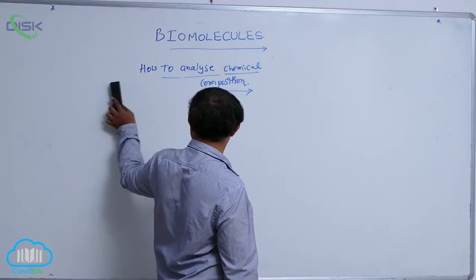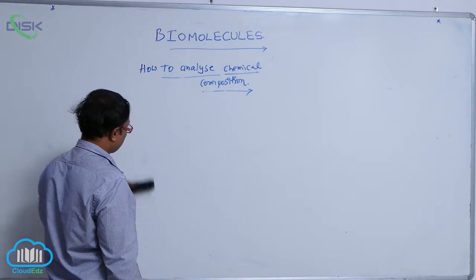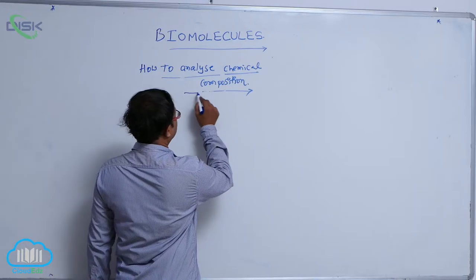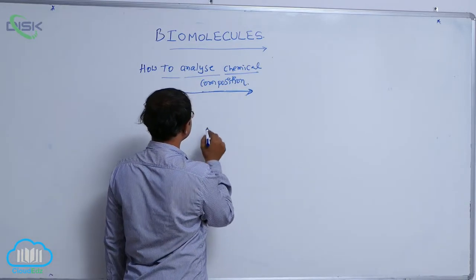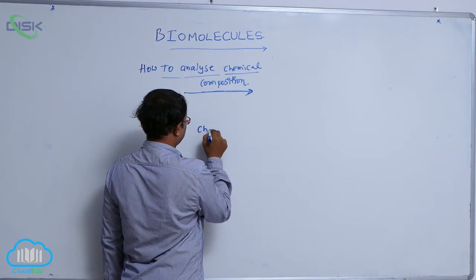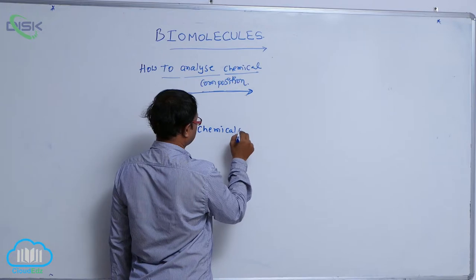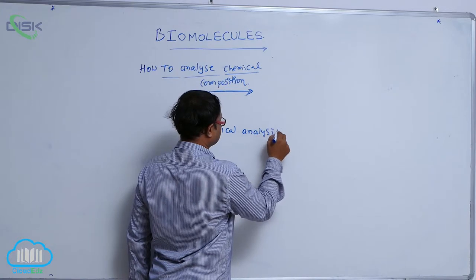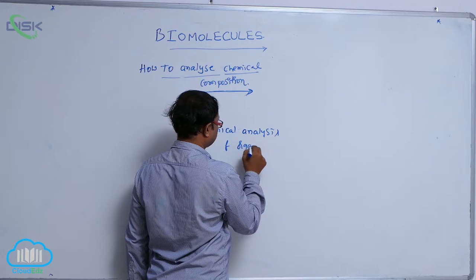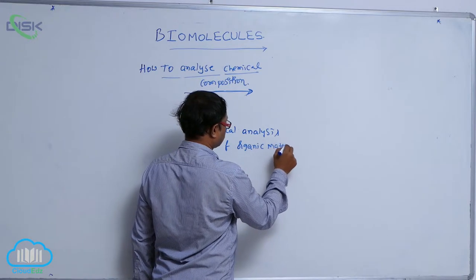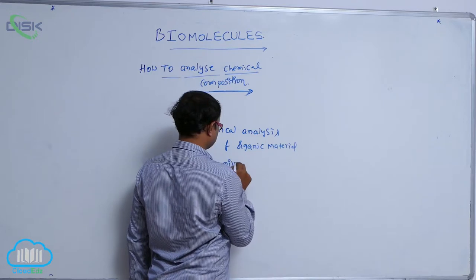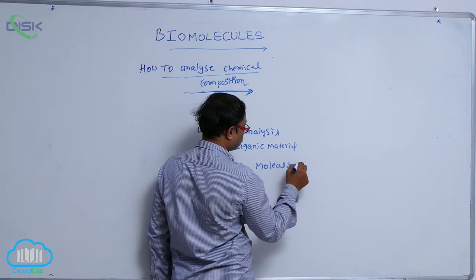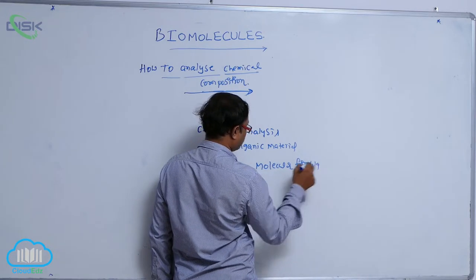Chemical organic compounds are obtained from living tissue, which we study in higher classes. For example, chemical analysis of organic material gives the molecular formula and chemical structure.